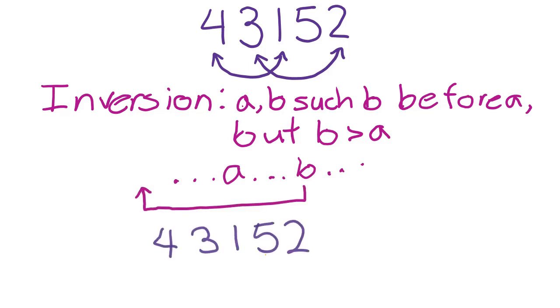For example, with 4 3 1 5 2, 4 and 1 are an inversion, since 4 is more than 1, yet 4 appears before 1. The other inversions are 4 and 3, 4 and 2, 3 and 1, 3 and 2, and 5 and 2. So there are 6 total inversions.